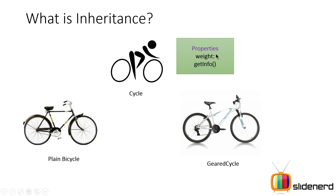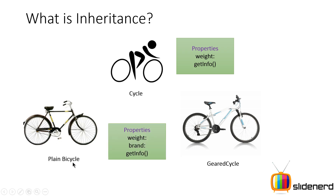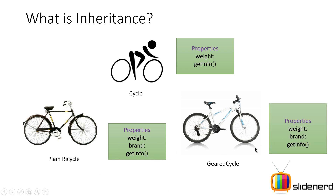Let's look at the properties of a cycle. You can say the cycle has some weight, a color, a kind of handle, a kind of seat. But for now, let's stick to one attribute which is weight. It also has a method called getInfo. Similarly, the plain bicycle has properties like weight, and you can add another property called brand representing which brand it belongs to, and there's the getInfo method again.